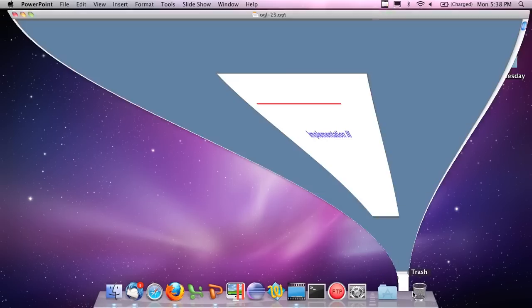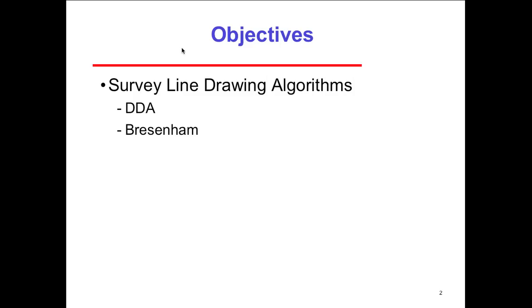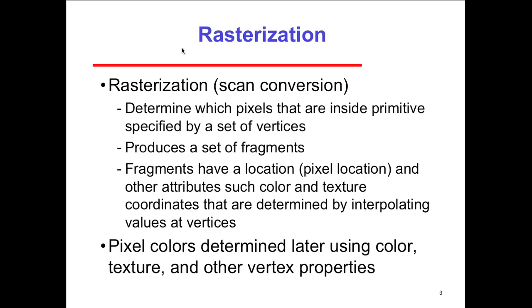The third and last part of our implementation technique. This material is kind of dry, which is why I'm giving it to you quickly — just for background information. You'll never end up implementing this unless you start writing your own graphics library. This part surveys line drawing algorithms: the DDA, and Bresenham's algorithm, which I'll explain in a few minutes. These would be line drawing algorithms.